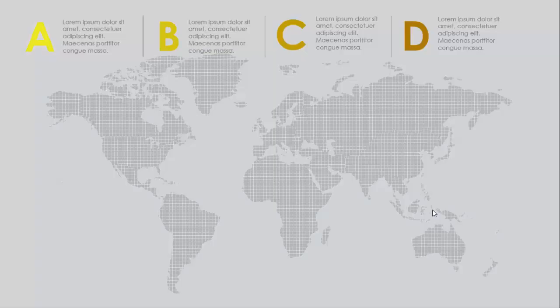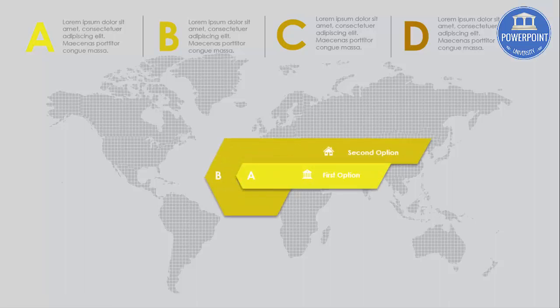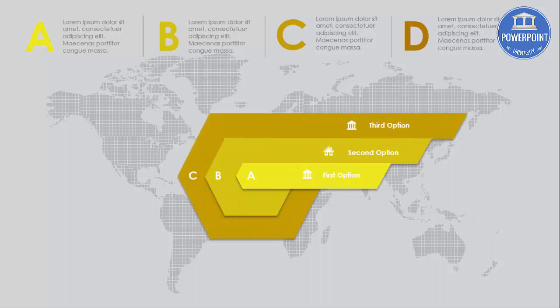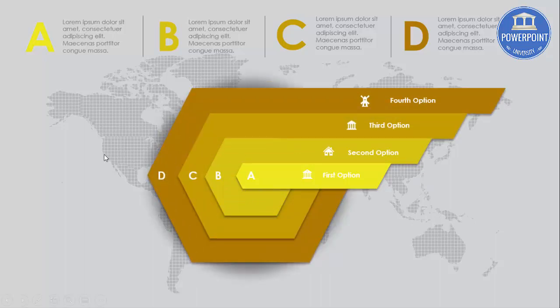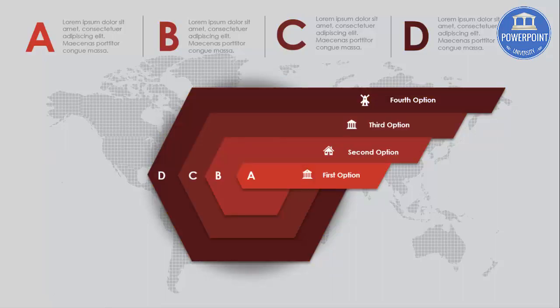Welcome to my YouTube channel PowerPoint University. In this tutorial I'm going to show you a four-step hexagon design in PowerPoint. This is how the slide looks — I have added a world map in the background and some detailed text. When I click, it shows the first option, then option B, option C, and option D. I have also created versions with different colors. Let's see how to create this four-step hexagon infographic slide.